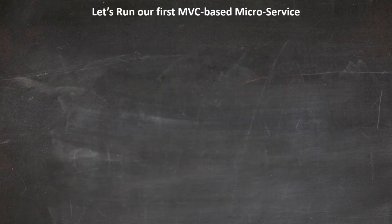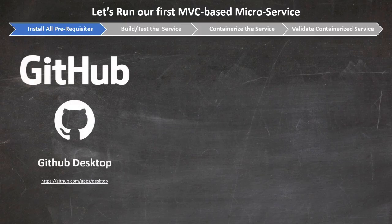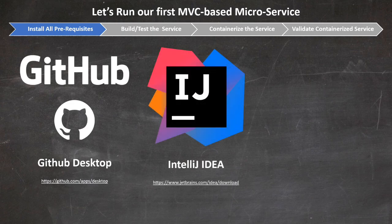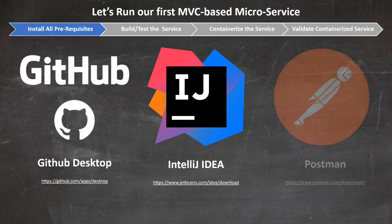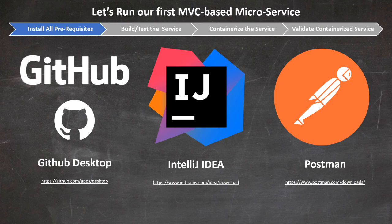Let's not waste any time and install the prerequisites. First, we need to download and install GitHub Desktop if you haven't done it yet — all the code for this second exercise is available via GitHub. We'll then download and install IntelliJ, which we'll use to develop and build our Java Spring Boot application. And then we'll download and install Postman, a great tool that will help us validate the RESTful APIs of our microservice. All links are listed in the video description.